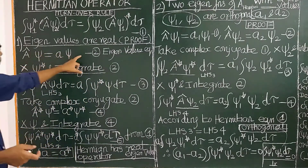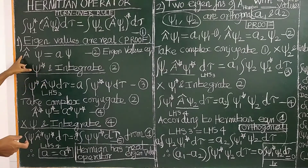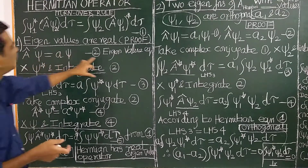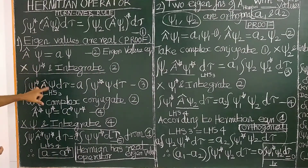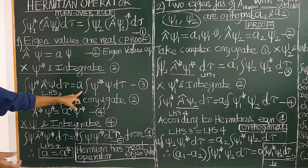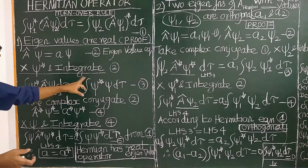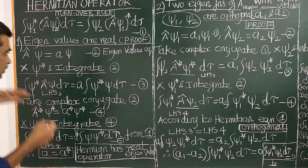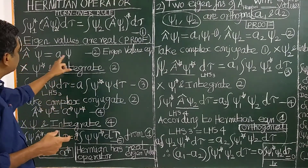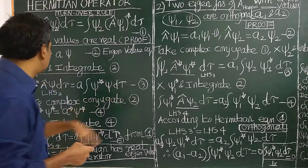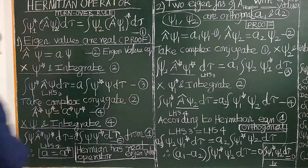Multiplying equation 2 by psi-star on the left side and integrating all over space, we get: integral psi-star (A-cap psi) d-tau equals A times integral psi-star psi d-tau. This is called equation 3.